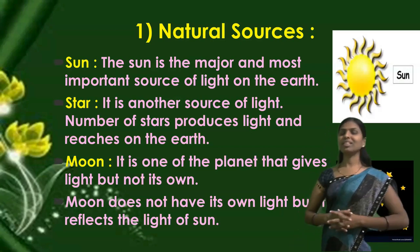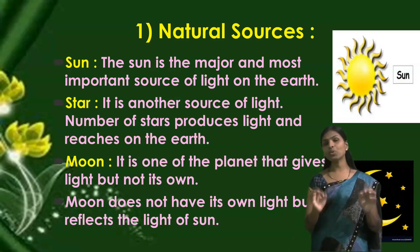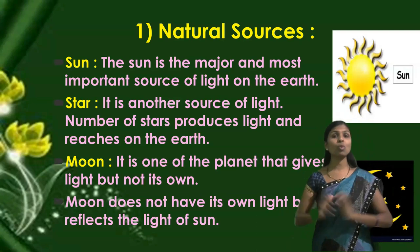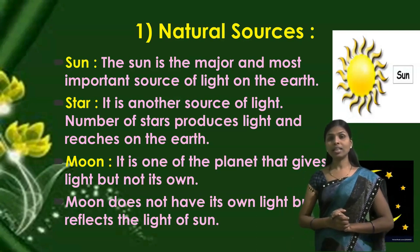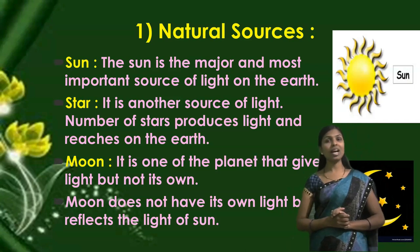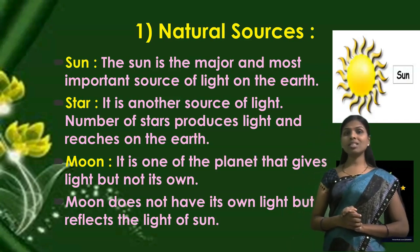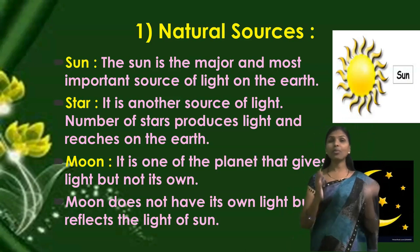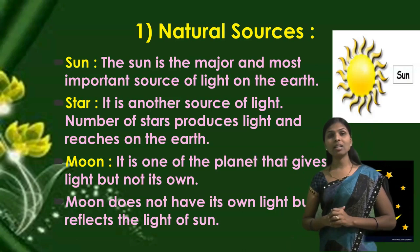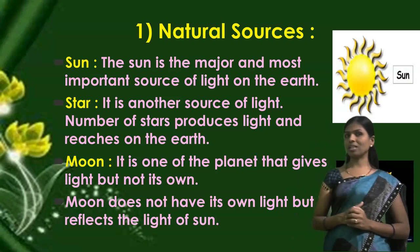The first natural source is the Sun. The Sun is the major and most important natural source of light on the Earth. In earlier times, people used sunlight as their only source of light. Even today we use the Sun, through different types of solar panels, devices, and solar heaters.